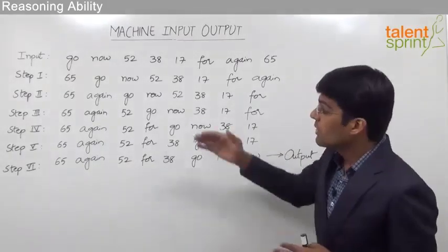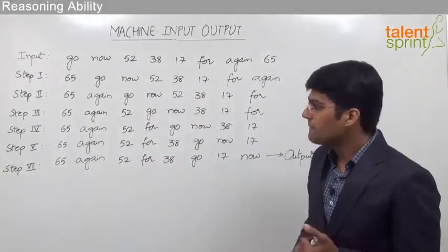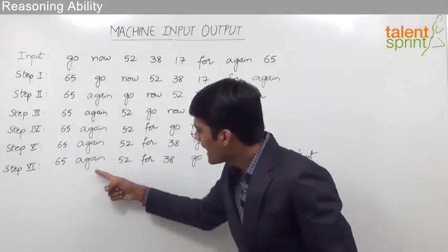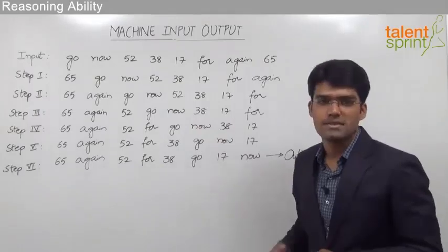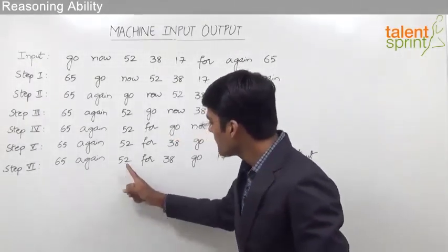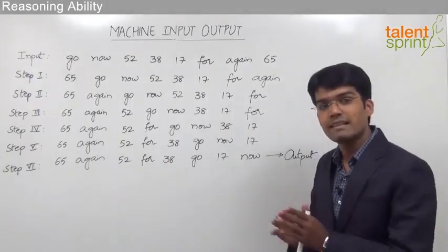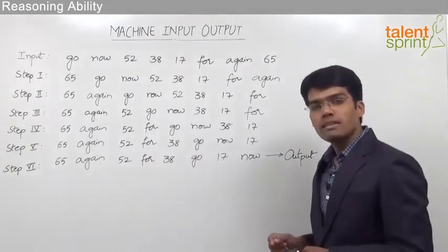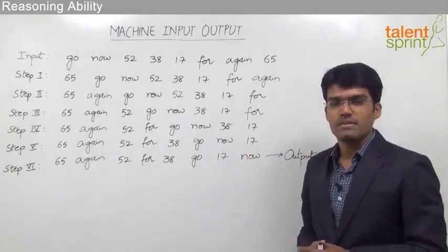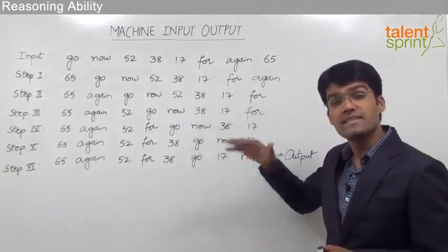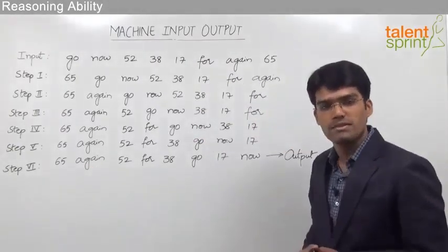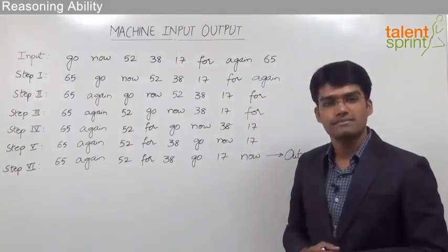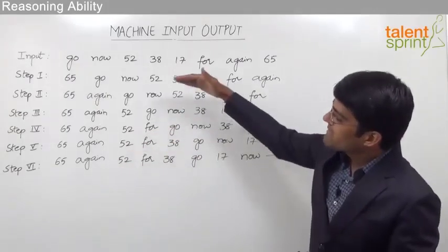To solve questions based on this rearrangement, the first thing we need to understand is the logic behind it. The first step is to look at the last step without bothering about the intermediate steps. From the last step we can make out that the words and numbers have been arranged in alternate positions. The numbers — 65, 52, 38, 17 — are in decreasing order, and the words — again, for, go, now — are in alphabetical order.